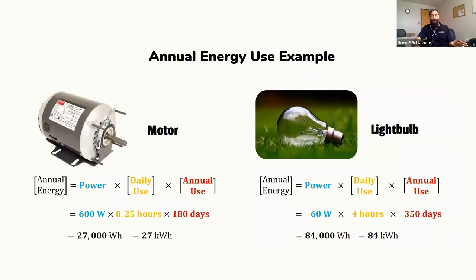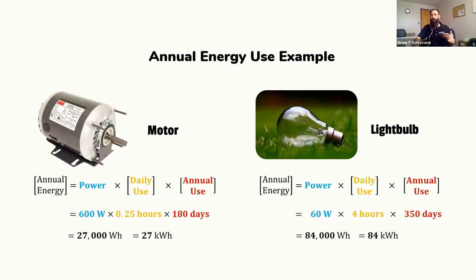You can do this for any kind of device in your home. The equation is pretty much the same for any electrical device — whether it be a motor or a light bulb, you need the power of the device and how long you're using it. In the motor example, you're charged for 27 kilowatt hours; for the light bulb, it's 84 kilowatt hours. The light bulb is only 60 watts — less powerful than the motor — but because you use it much more often, it ends up using more energy.